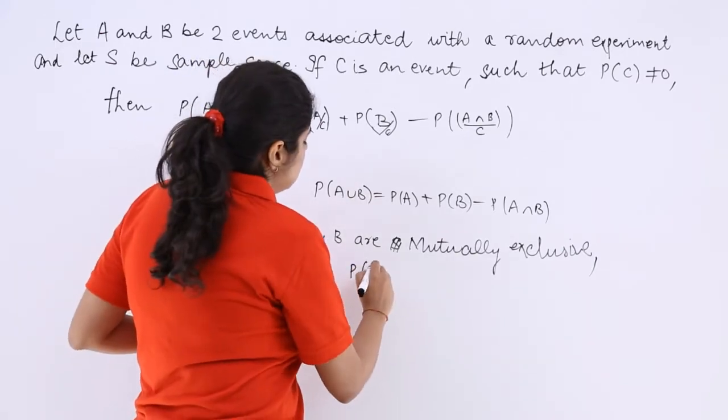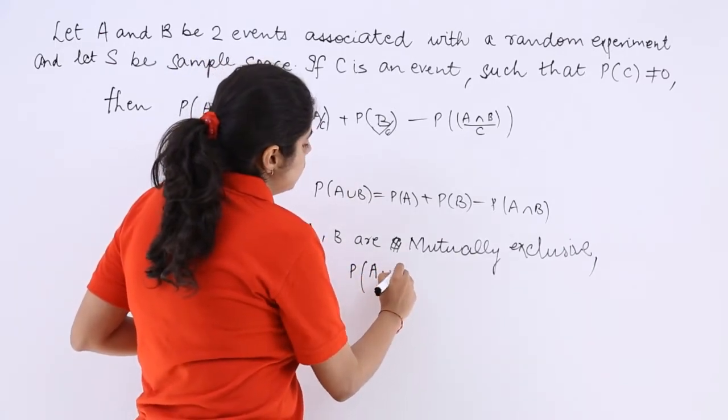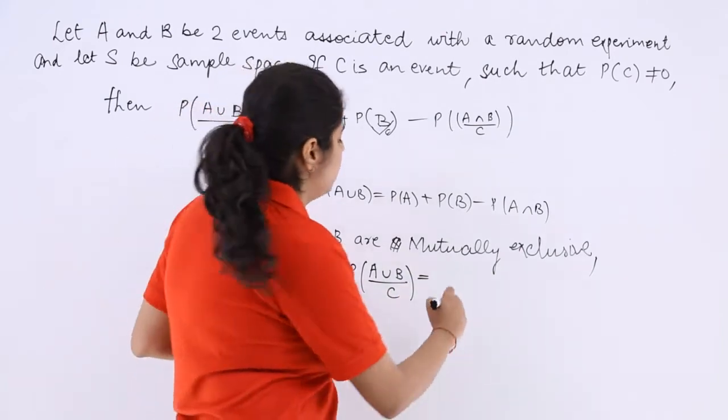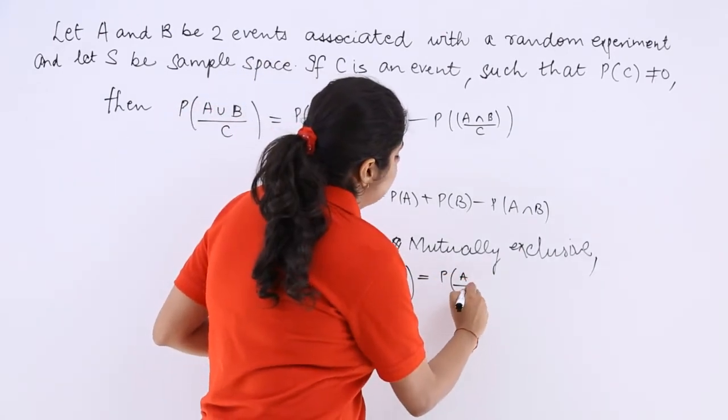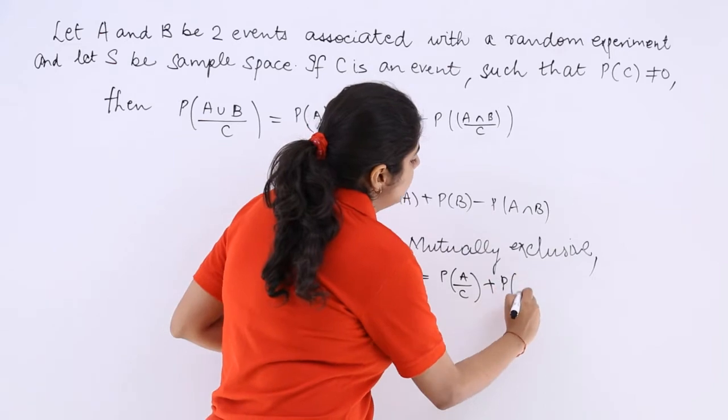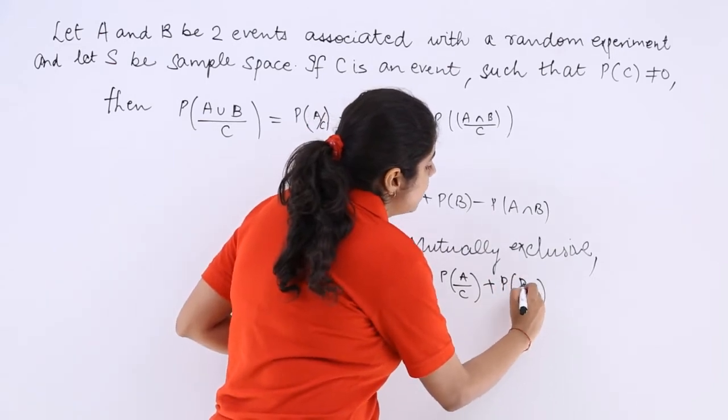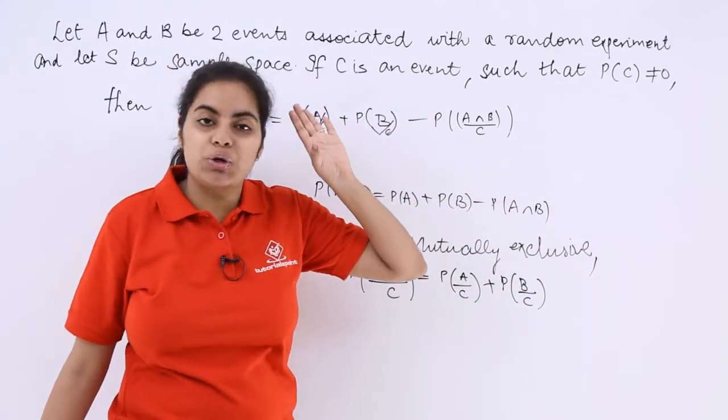So the answer to probability A union B with respect to C is equal to probability A with respect to C plus probability B with respect to C because their intersection part would come out to be 0.